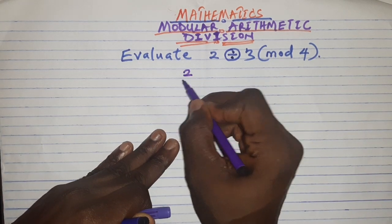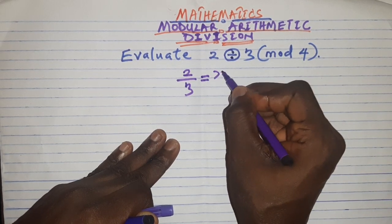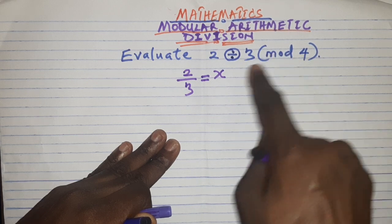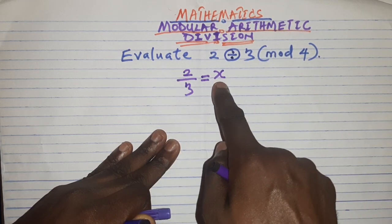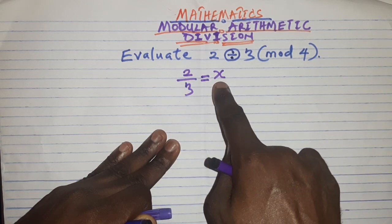2 divided by 3 equals, you can say equals x because you don't know the value yet. So write it this way: 2 divided by 3 mod 4. You can start by writing 2 divided by 3 equals x because you don't know the value.